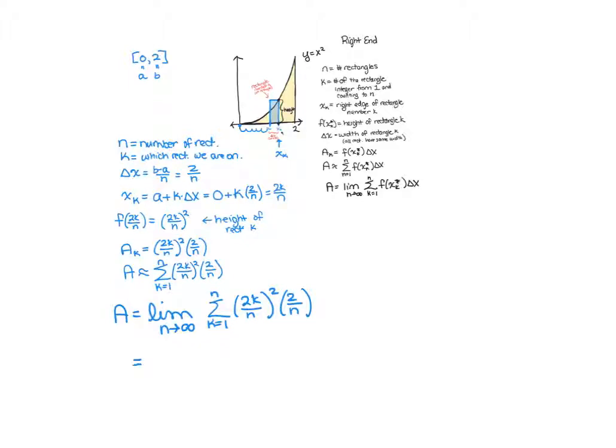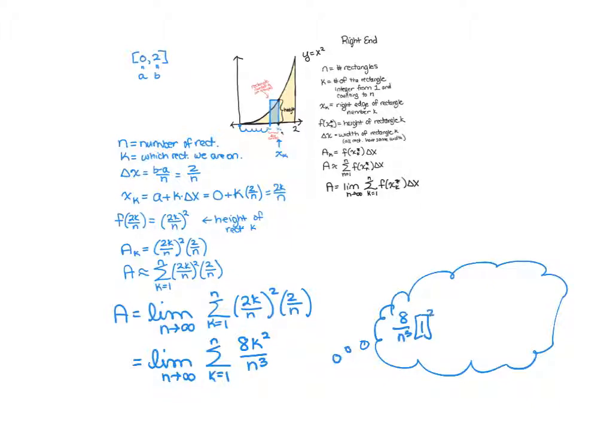First thing we're going to do is we're going to simplify: limit as n goes to infinity, sum k goes from 1 to n of 8k squared over n cubed. And then we're going to think about over here in our thought bubble what this sum is actually doing. So it's saying 8 over n cubed times 1 squared, plus 8 over n cubed times 2 squared, plus 8 over n cubed times 3 squared, plus dot dot dot, and eventually we're going to get to the nth one, right?